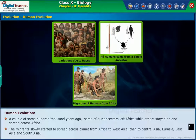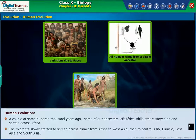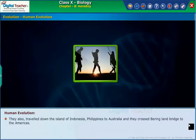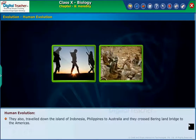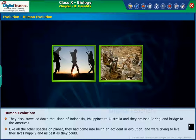The migrants slowly started to spread across the planet — from Africa to West Asia, then to Central Asia, Eurasia, East Asia, and South Asia. They also traveled down the islands of Indonesia and the Philippines to Australia, and they crossed the Bering Land Bridge to the Americas. Like all other species on the planet, they had come into being by accident in evolution and were trying to live their lives as happily and as best as they could.